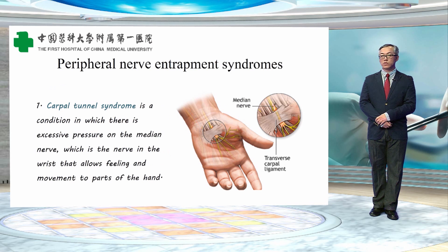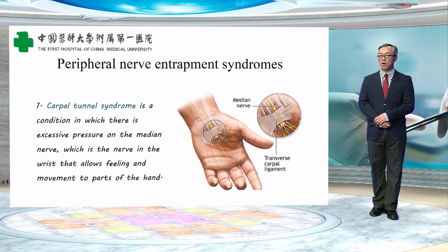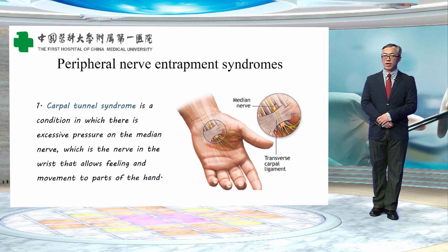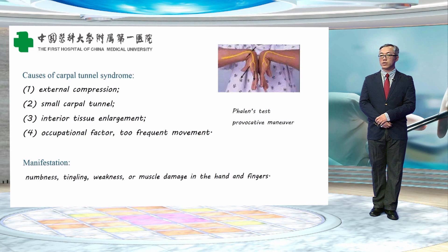This section covers peripheral nerve entrapment syndromes. The first is carpal tunnel syndrome — a condition in which there is excessive pressure on the median nerve, which is the nerve in the wrist that allows feeling and movement to parts of the hand.